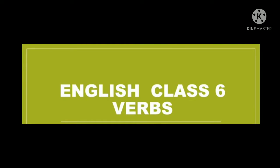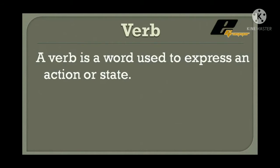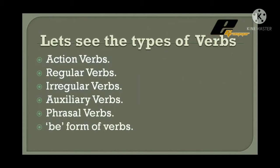Good morning, dear students. I am welcoming you back to today's class where I am going to teach you about verbs and its kinds. A verb is a word which is used to express an action, state of being, or some position. They are of different types: action verbs, regular verbs, irregular verbs, auxiliary verbs, phrasal verbs, and be-form of verbs. In today's video we are going to explain them individually one by one along with examples.